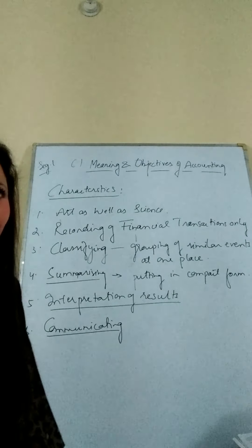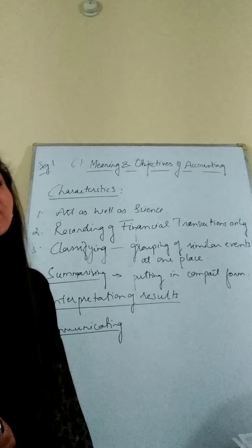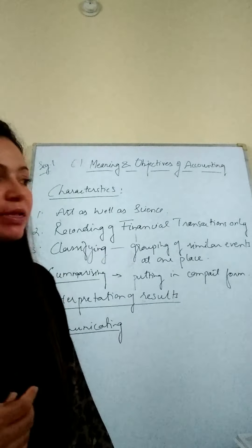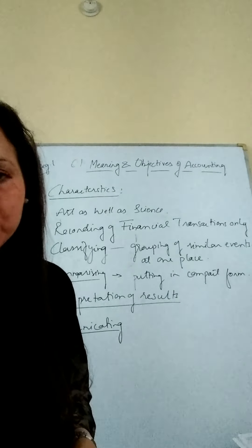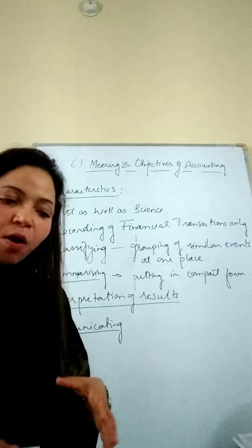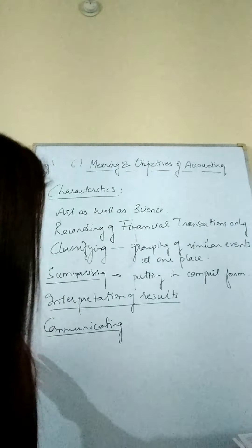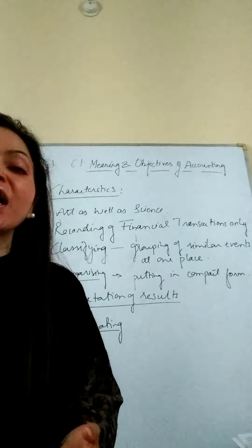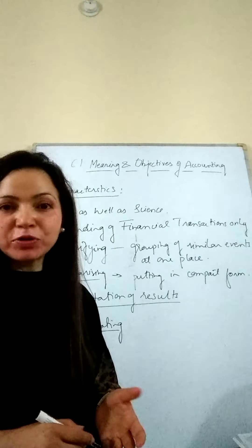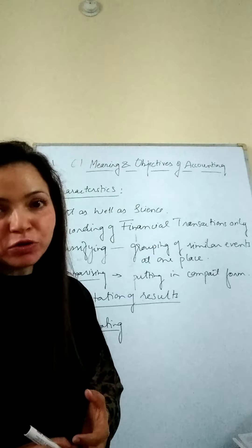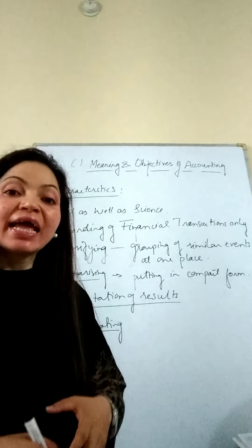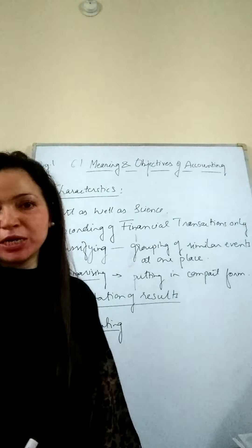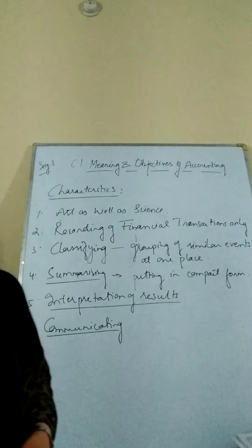After getting the summarized records, we interpret the results — whether profit, loss, progress, or decline — which is primarily done by management. They read the summaries and form their judgments. Communication of results is also very important: the government needs accounting information to calculate tax, management needs it to formulate policies and expand the business, and employees also require it. We must communicate this accounting information to all these various groups of people.